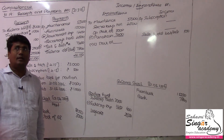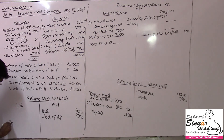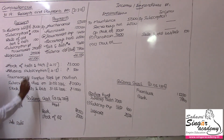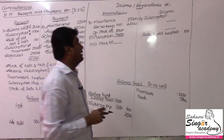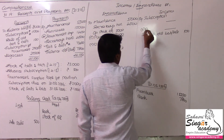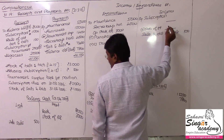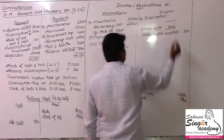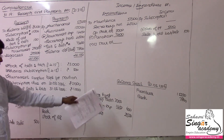Advance subscription as on 1-4-2015: previous year advance subscription is a liability — value being 500. Add advance of the previous year, value 500, is an addable item. Tournament surplus kept for pavilion goes to the balance sheet — value 600.